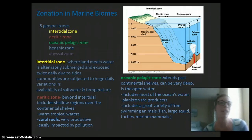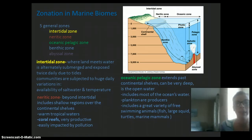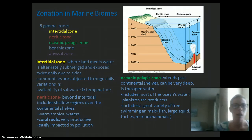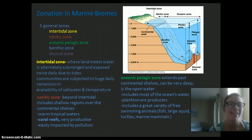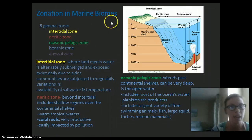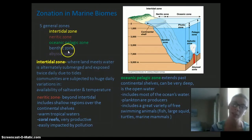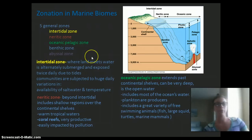Now for the zonation in marine biomes. Marine biomes are our oceans, and they have five zones compared to the four zones in lake zonation. These five zones include the intertidal zone, the neuritic zone, the ocean pelagic zone, the benthic zone, and the abyssal zone.